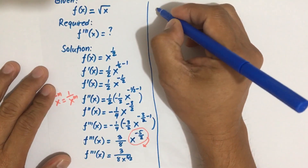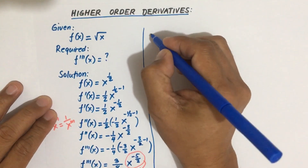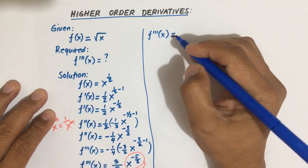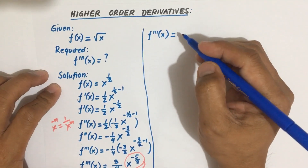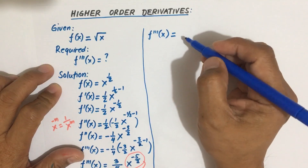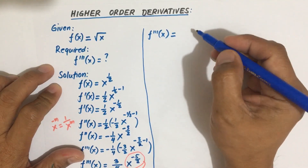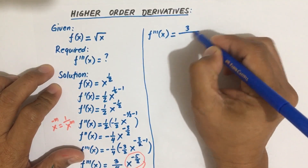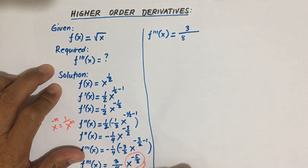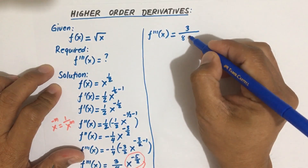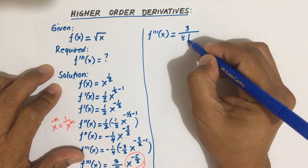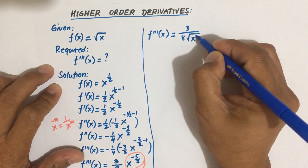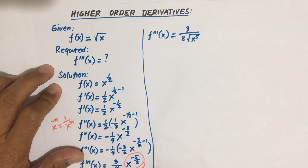So f triple prime of x — we can rewrite the denominator term: three over eight, and x to the five-halves can be rewritten as the square root of x to the fifth power.